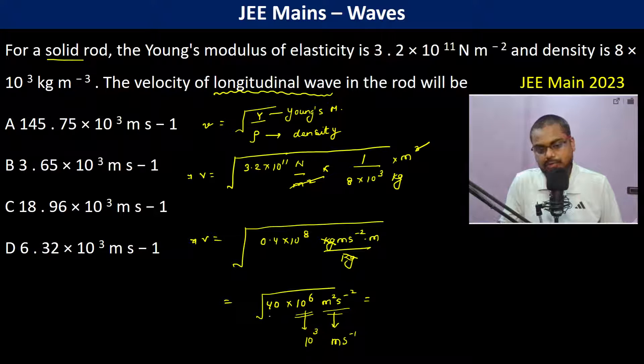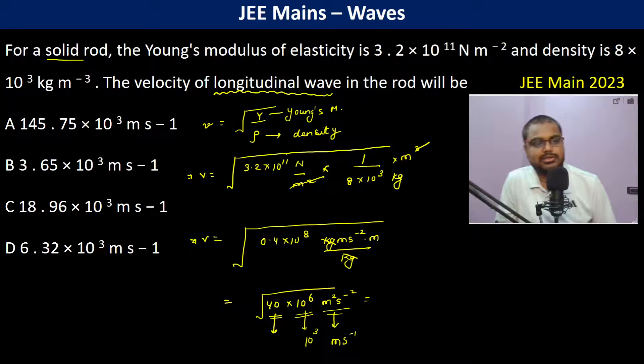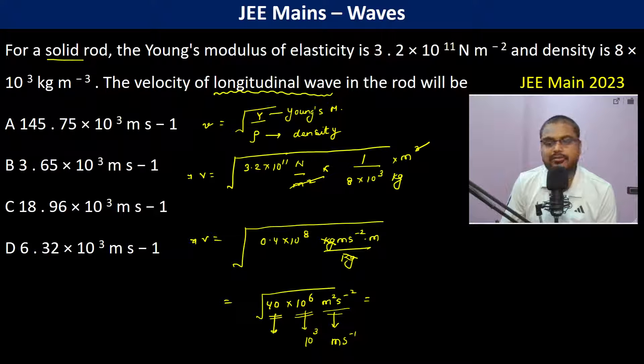So now what is going to be this. We can clearly see that 36, 6 into 6 is 36, so therefore it's something like 6.32. So therefore D is the answer. Thank you.